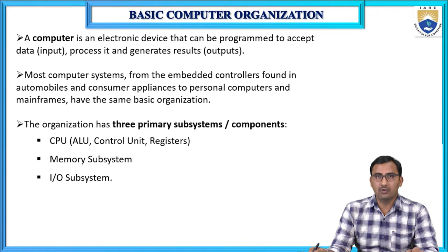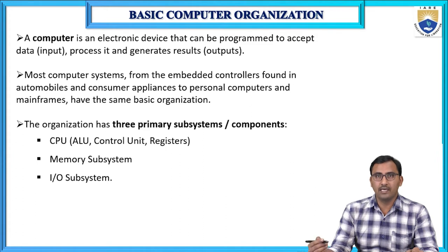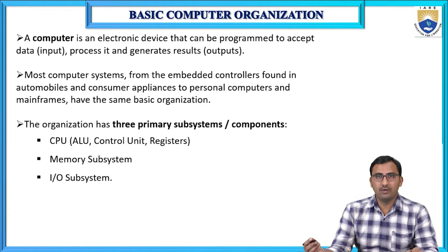A computer is an electronic device that can be programmed to accept the data, process it and generate the results. Basically, the computer is made up of some electronic devices and it is programmed to accept the data from different input devices. After accepting the data from the input device, then it will process and finally it generates the output, which can be given to the user using some different output devices.